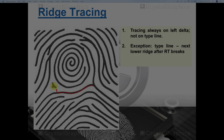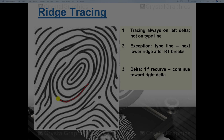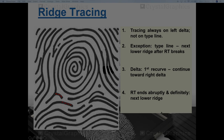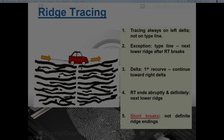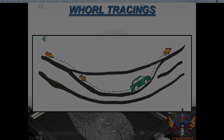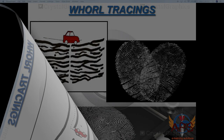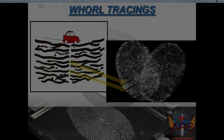Here are some additional examples for ridge tracing with the useful rules applied. This is an example of an inner tracing, and here is a typical example of ridges that abruptly end — we follow the next ridge under it until we reach the location of the right delta. Counting one, two, three gives an outer tracing. For short breaks that are not definite ridge endings — perhaps a scar, healed injury, or natural skin fold — we ignore the gap and proceed with the tracing. For bifurcations, we follow the lower ridge.